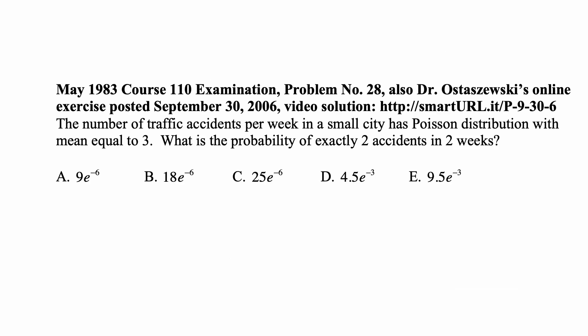Here's a problem for today for exam P on probability. The number of traffic accidents per week in a small city has a Poisson distribution with mean equal to 3. What is the probability of exactly two accidents in two weeks?